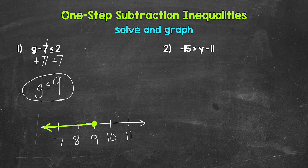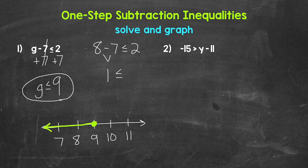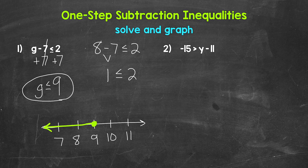Let's check a solution. Let's try 8: plug in 8 for G. So 8 minus 7 is less than or equal to 2. 8 minus 7 gives us 1, and 1 is less than or equal to 2 — correct. Let's also check 9: plug in 9 for G. 9 minus 7 gives us 2, and 2 is less than or equal to 2 — so 9 works as well. Our answer: G is less than or equal to 9. G can be anything less than or equal to 9.